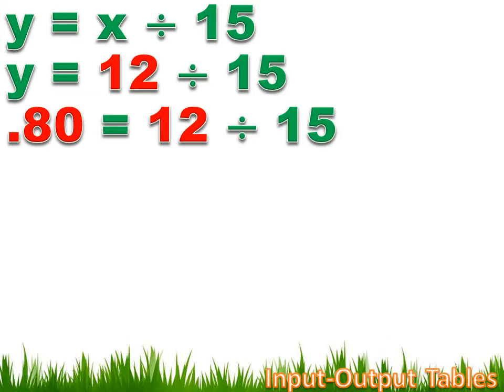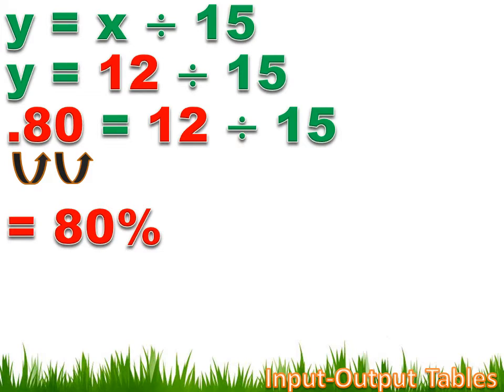Now 0.80 is probably not how you're used to seeing your grade. Usually your teacher converts that decimal into a percent. And you remember how to do that, don't you? Yeah, that's right. You move the decimal place 2 to the right, or you multiply by 100, and 0.80 becomes 80%. Way to go. You did pretty well.